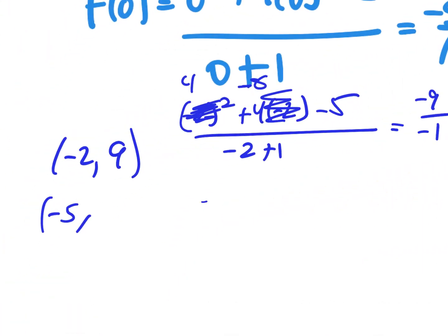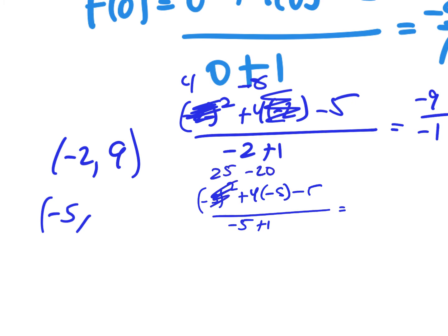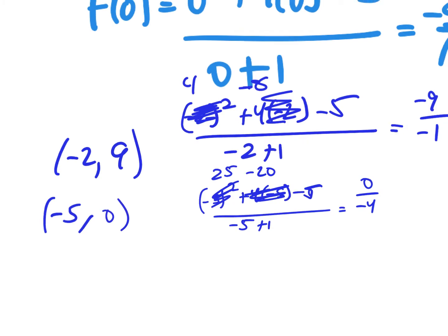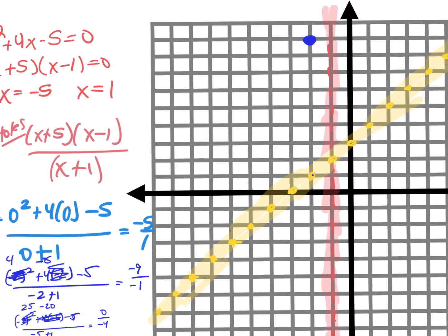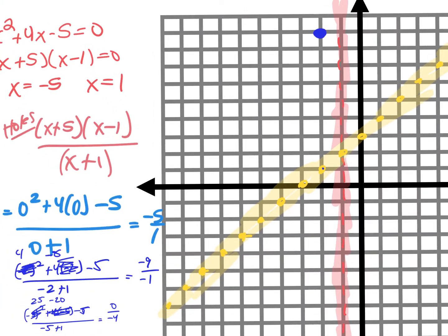Now let's do the same with negative 5. I have negative 5 squared plus 4 times negative 5 minus 5 over negative 5 plus 1. Negative 5 squared is 25. 25 minus 20 is 5, and 5 minus 5 is 0 over negative 4. What's 0 divided by negative 4? Zero. So when I plug in negative 5, I get 0 — plot that at negative 5, 0.